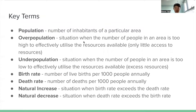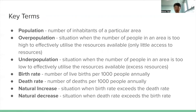These are the key terms you need to know. Population is the number of inhabitants of a particular area. Overpopulation is the situation when the number of people in an area is too high to effectively utilize the resources available, meaning each individual only has access to very limited resources. Underpopulation is the direct opposite — the situation when the number of people in an area is too low to effectively utilize the resources available, so resources are in excess.